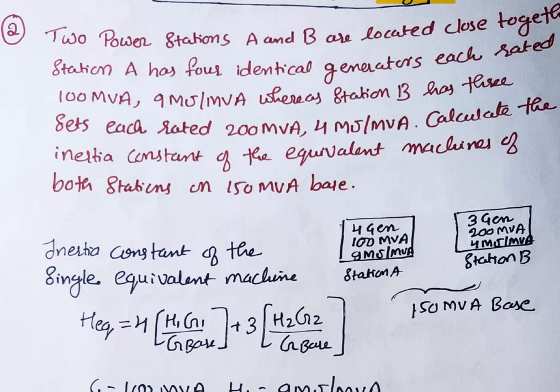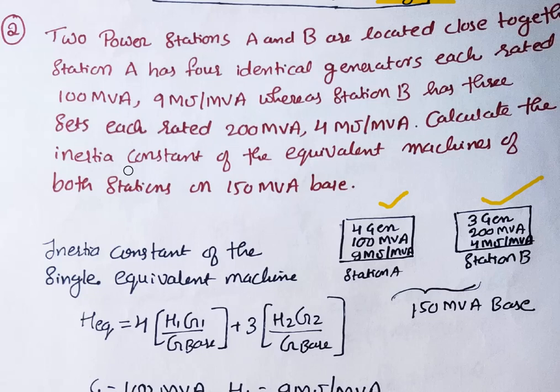The second question is simpler. Two power stations A and B are located close together. Station A has 4 identical generators, each rated 100 MVA with H = 9 megajoules per MVA. Station B has 3 generators, each rated 200 MVA with H = 4 megajoules per MVA. Calculate the inertia constant of the equivalent machine on a base of 150 MVA.